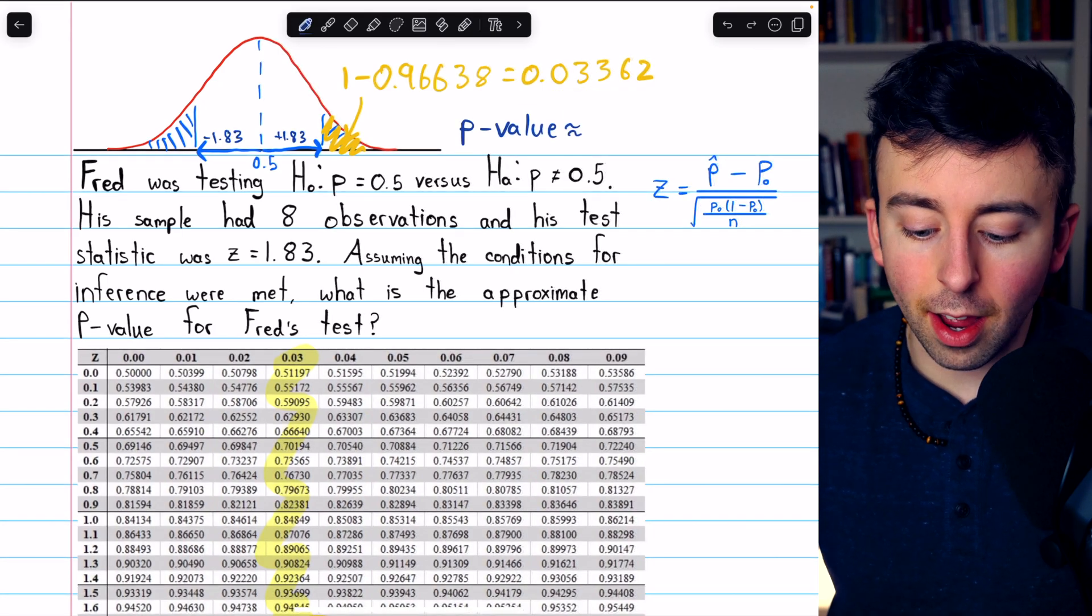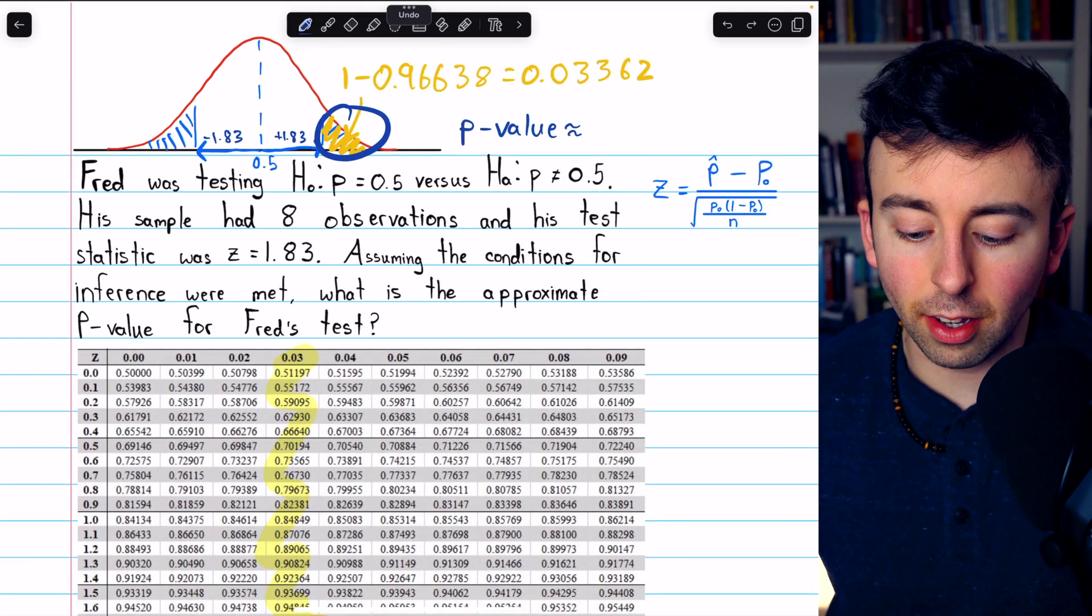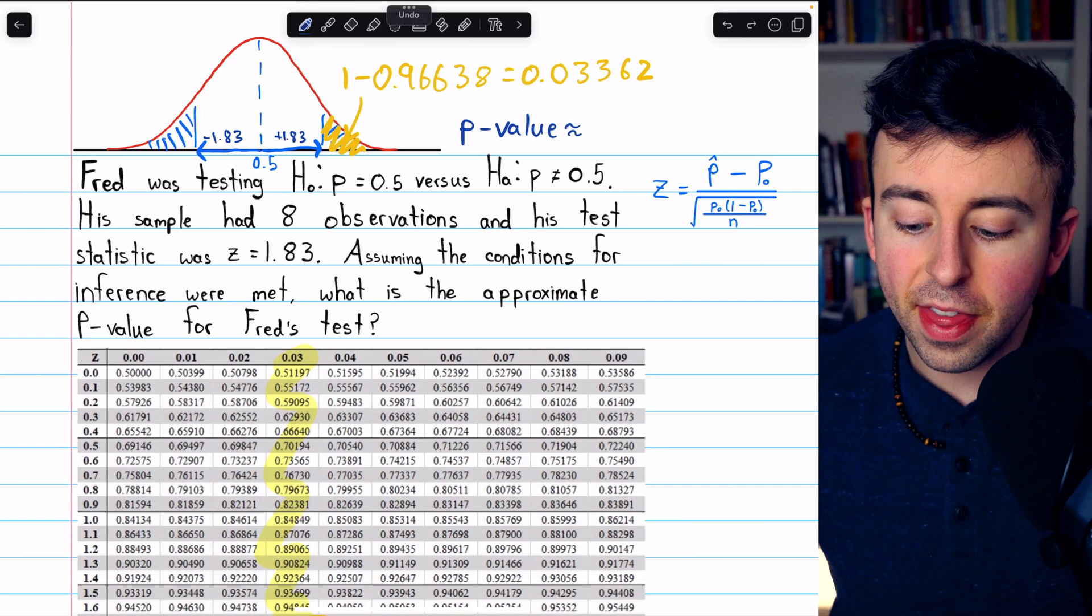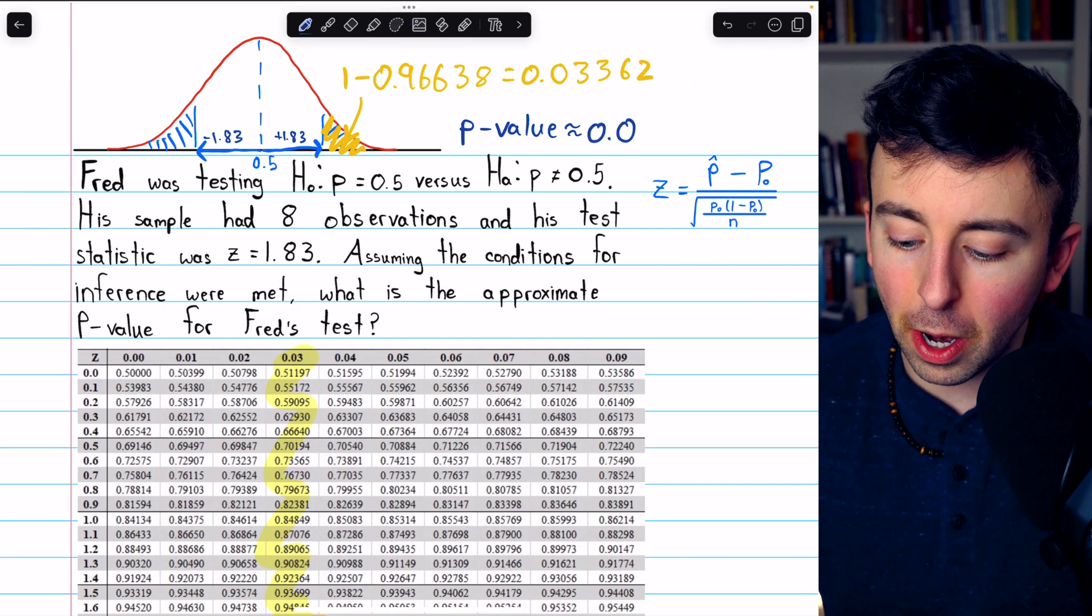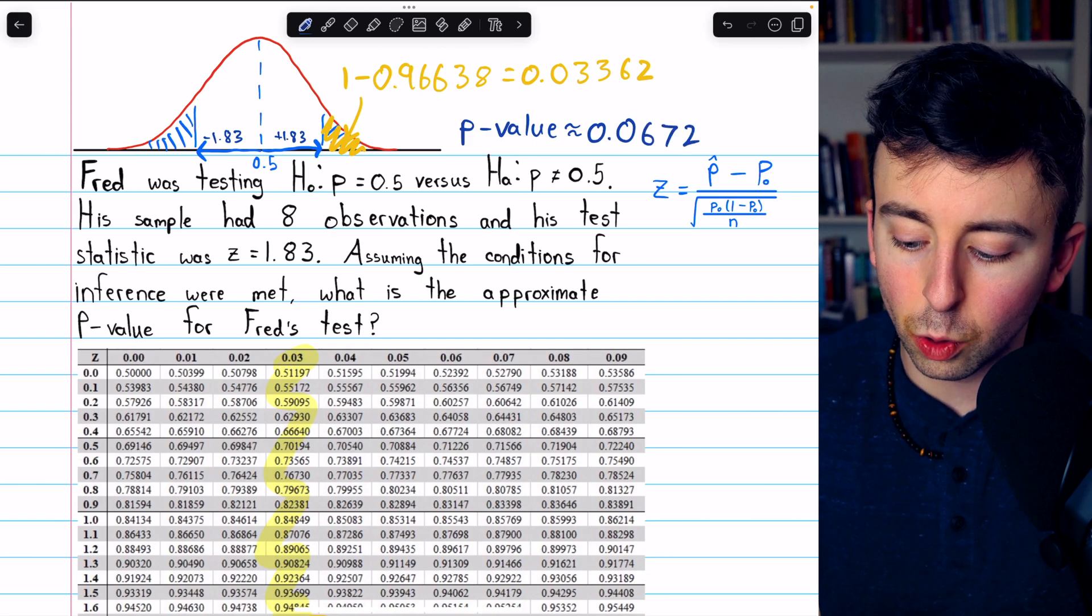Finally, we're not done. We're doing a two-tail test, so we have to double this value. Thus, our final p-value is about 0.06724.